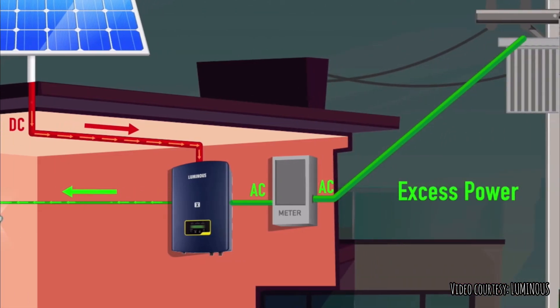Any excess current that the solar panels create is fed back into the grid as credit, which can be later drawn back in based on the requirement.